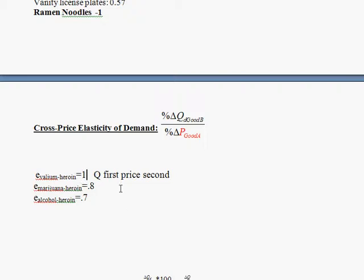Now this one would mean that as the price of heroin goes up one percent, the quantity of Valium that a drug addict would like goes up also by one percent, and these would be substitutes, very close substitutes, measured by the fact that this is a high elasticity. Now this elasticity of 0.8 is smaller, which means as the price of heroin goes up, people want more marijuana but it's not as close of a substitute. And here, heroin price goes up, alcohol is a substitute but not as good.